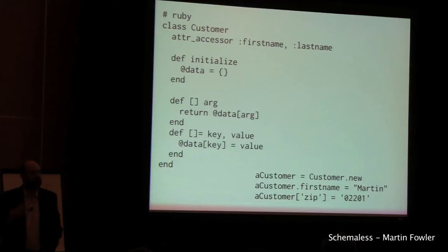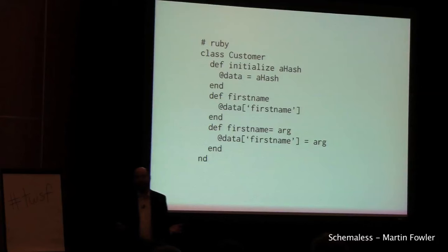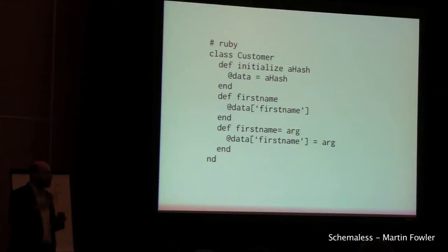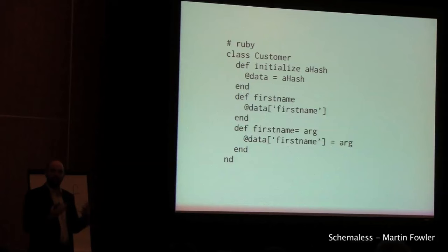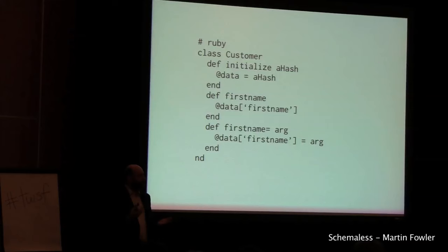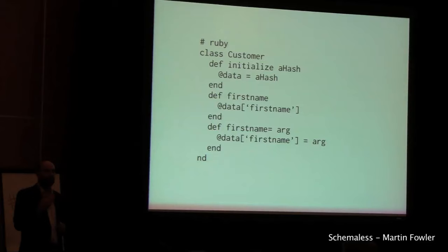Similarly, just because you're pulling data from a schemaless store doesn't mean you have to use it in a schemaless way in memory. A common thing I do is read data through some kind of dictionary-like structure — maybe I've parsed some JSON and turned it into a dictionary — and then wrap that with explicitly defined methods that go inside the dictionary internally, giving me a more explicit structure on the outside. So I may have a schemaless piece of data, but I can wrap it in a piece of schema in memory. You can combine the two together.